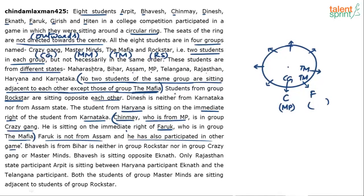Students from the group Rockstar must be opposite to each other. The positions next to Crazy Gang or Mafia are already blocked. The only remaining pair of directly opposite positions that are both open is the pair across from the Mafia-CG cluster. So those two positions are assigned RS and RS — Rockstar and Rockstar — and they are opposite each other.